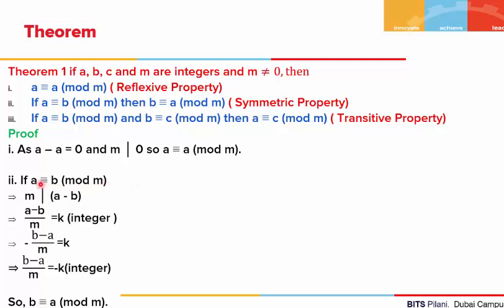The second property: if a is congruent to b, then b is congruent to a. Starting with a is congruent to b mod of m, this means that the difference of a and b is divisible by m. From the definition of divisibility, a minus b upon m equals some integer k. Pulling out a minus sign, we get minus(b minus a) upon m equals k, or b minus a upon m equals minus k, which is again an integer. So if the difference of b and a is divisible by m, by the definition of congruence, b is congruent to a mod of m.